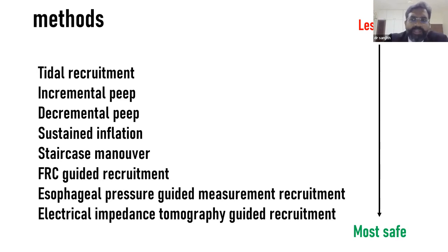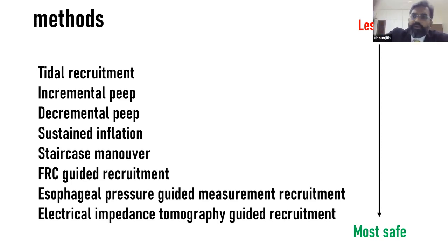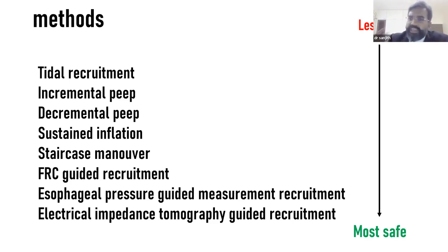Incremental PEEP: start at a low PEEP and increase by small steps every 5 minutes until saturation improves by more than 3% or hemodynamics deteriorate. Saturation improvement of >3% signifies successful recruitment; then go one step higher for optimal PEEP. Ultrasound can guide this process by visualizing alveolar opening. However, incremental PEEP still raises stress and is considered less safe.